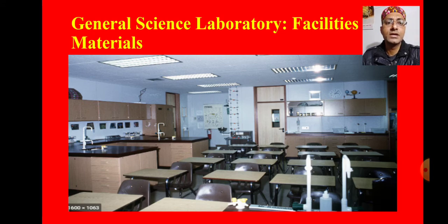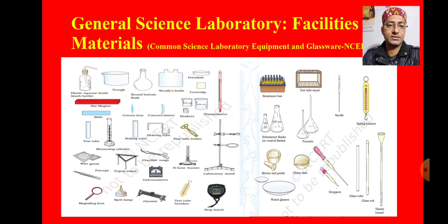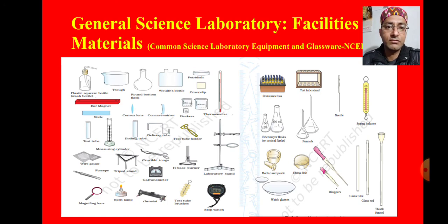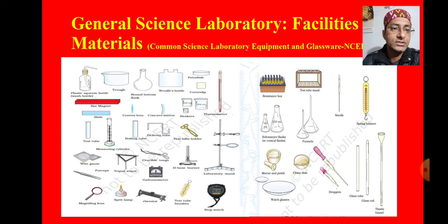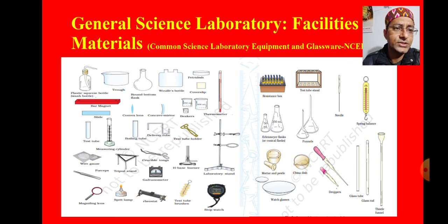These are the general facilities of the science laboratory. The following are common glassware and equipment available: plastic squeeze bottle, trough, round-bottom flask, Wolf's bottle, cover-shaped battery dishes, thermometer, beakers of different sizes, concave mirror, convex mirror, slides, test tube, measuring cylinder, wire gauze, forceps, tripod stand, crucible tongs, galvanometer, edge-base burner, laboratory stand, magnifying lens, spirit lamp, rheostat, brushes, stopwatch, volumetric flasks, funnels, conical flasks, resistance box, test tube stand, needle, spring balance, droppers, china dish, mortar and pestle, watch glass, glass tube, glass rod, and thistle funnel.